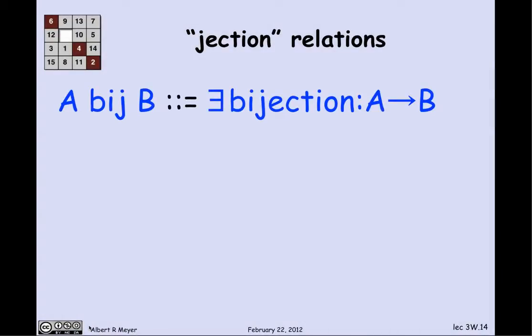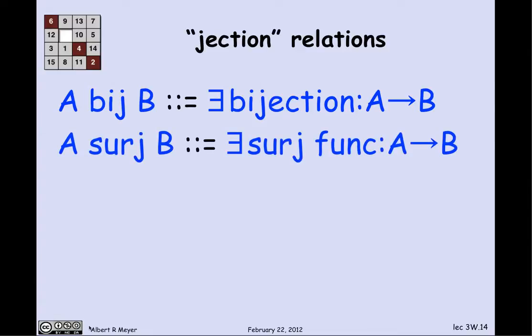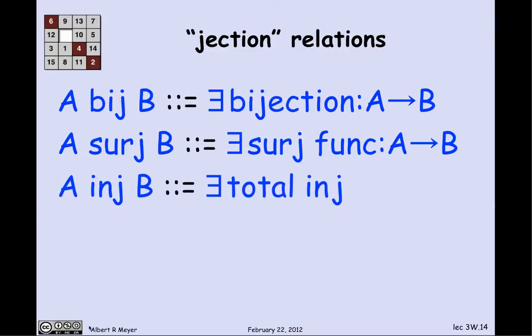To summarize, we can characterize these relations between sets. Let's define: A bijB means there's a bijection from A to B — a binary relation where the domain and co-domain are the class of finite sets or all sets. A surjB means there's a surjective function from A to B. And A injB means there's a total injective relation from A to B. So we have those three relations between sets.